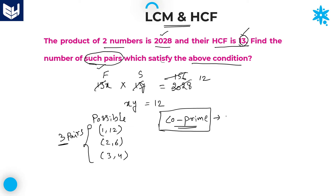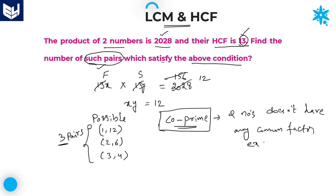The meaning of co-prime numbers is: two numbers that don't have any common factor except one — because one is a factor of every number, so we should not consider one as the common factor. So the definition of co-prime numbers is: two numbers that don't have any common factor except one are called co-prime numbers. Out of all possible pairs, we need to take only co-prime numbers, because if we take non-co-prime numbers, it will not satisfy the condition of HCF.